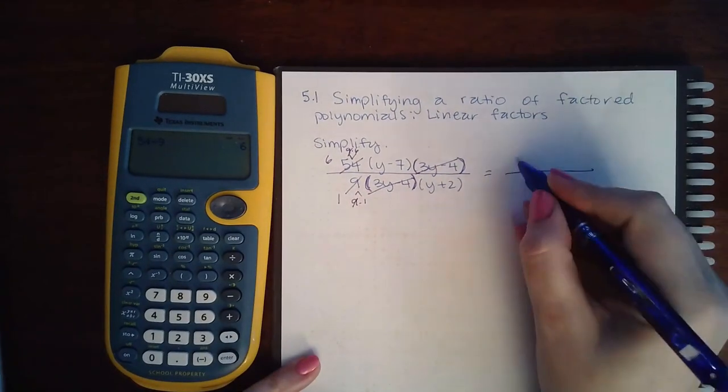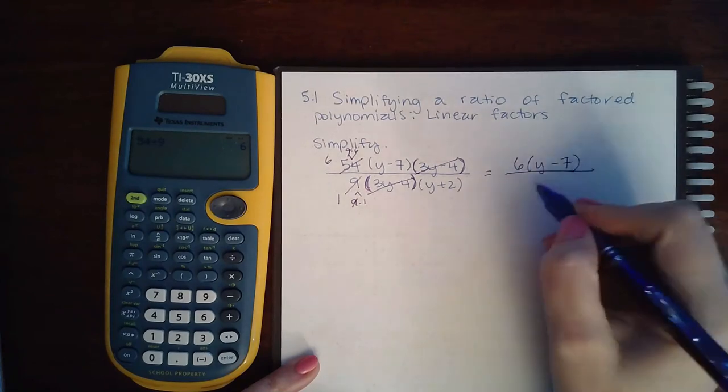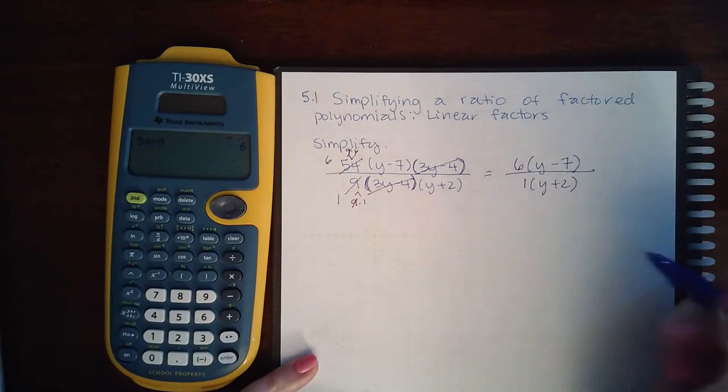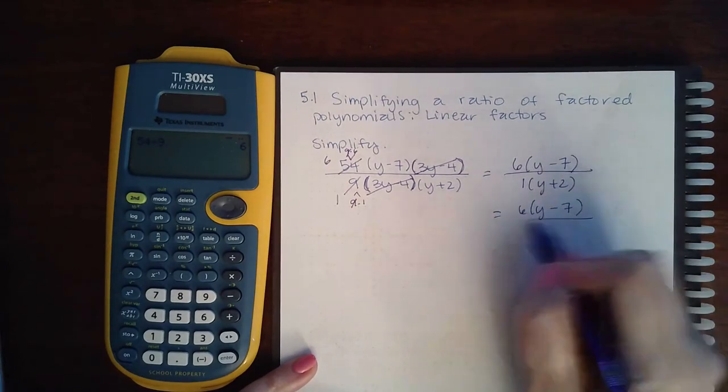And what I'm left with is the 6 and y minus 7 in the numerator, and then 1 and y plus 2 in the denominator. Now you can clean this up a little bit. You don't necessarily have to distribute the 6,